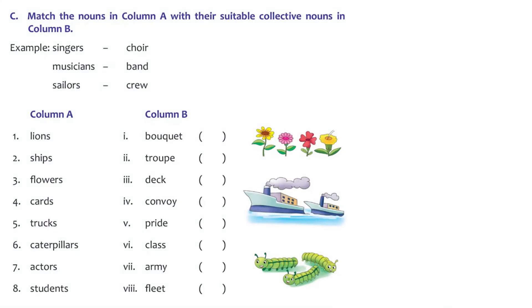Let's look at column A and column B on page 37 and match which collective noun is suitable for each. Lions - a group of lions is called a pride, like in the movie Lion King. Ships - a fleet of ships. Flowers - a bouquet; we usually love to give bouquets for occasions. Cards - a deck of cards. Trucks - a convoy of trucks. Caterpillars - an army of caterpillars.